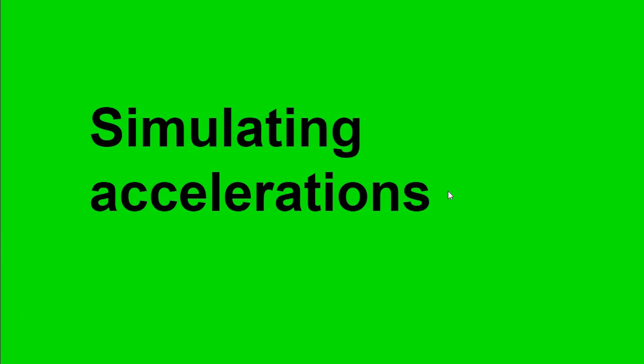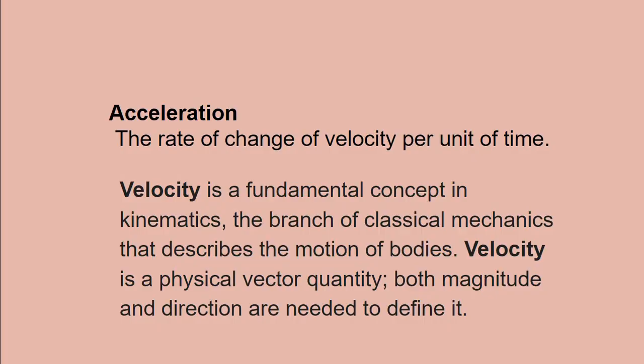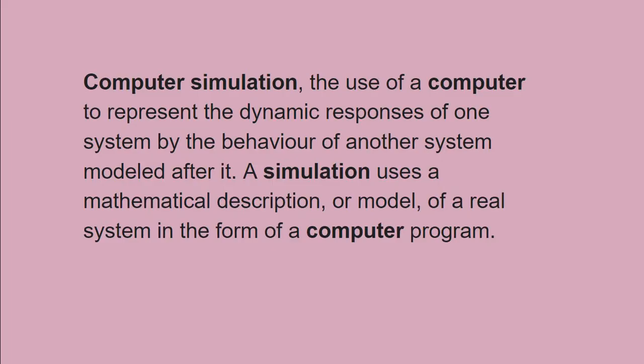Next we go to simulating accelerations. And the third definition is also important for this topic: computer simulation. What is simulation? When we are doing animation, this is very important to know. Computer simulation is the use of a computer to represent the dynamic response of one system by the behavior of another system modeled after it. If we want to see the very easy meaning, a simulation uses a mathematical description or model of a real system in the form of a computer program. We are making a model.